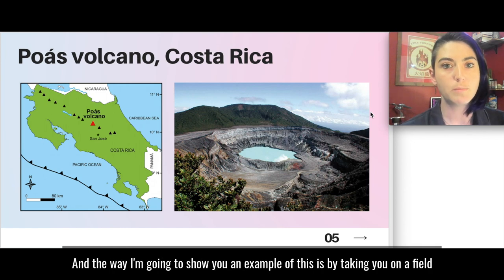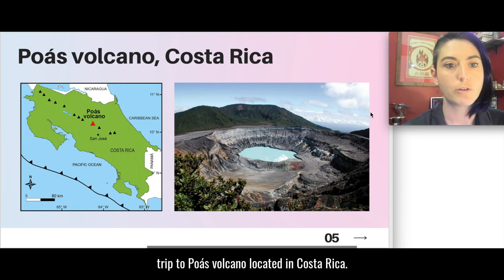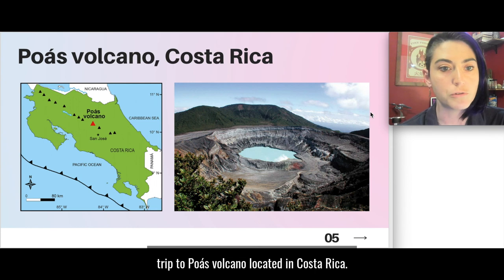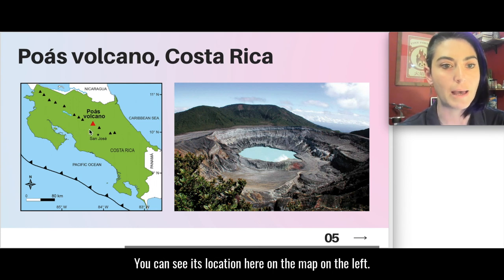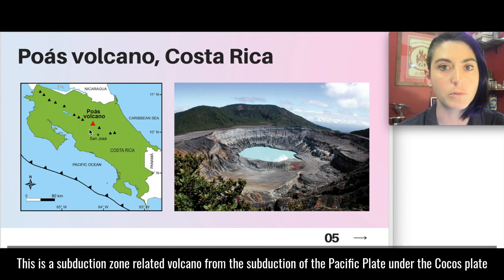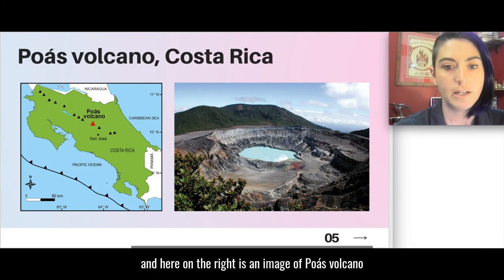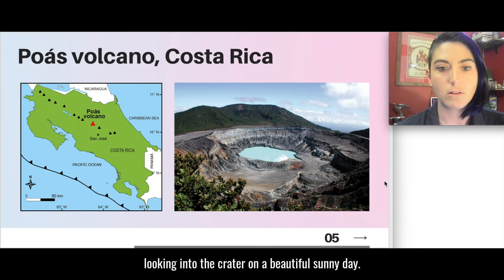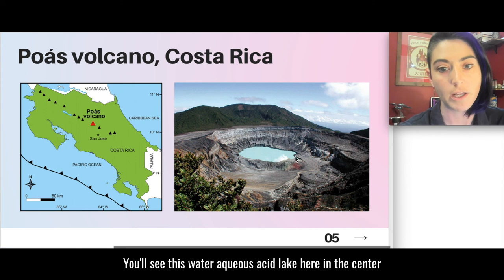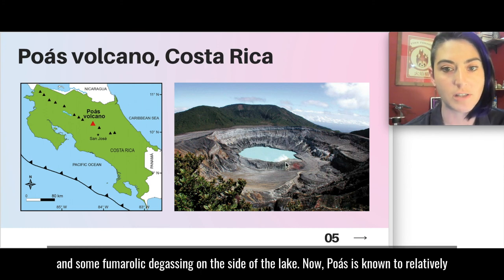And the way I'm going to show you an example of this is by taking you on a field trip to Poas volcano located in Costa Rica. You can see its location here on the map on the left. This is a subduction zone related volcano from the subduction of the Pacific Plate, the Cocos Plate. And here on the right is an image of Poas volcano looking into the crater on a beautiful sunny day. You'll see this water aqueous acid lake here in the center and some fumarole degassing on the side of the lake.